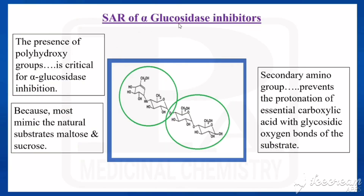Now we will see the SAR of alpha-glucosidase inhibitors. These inhibitors have many hydroxy groups — polyhydroxy groups — which are essential for alpha-glucosidase inhibition because they mimic the natural substrates, maltose and sucrose.